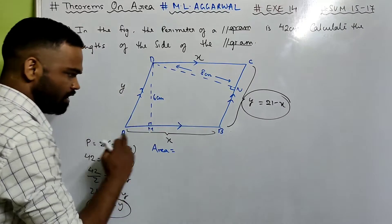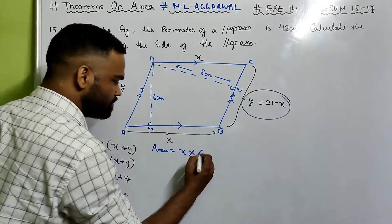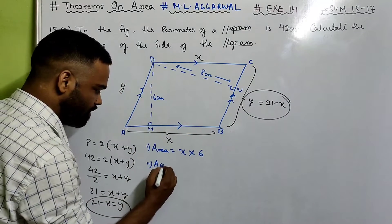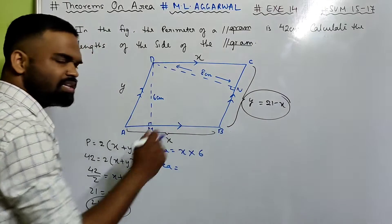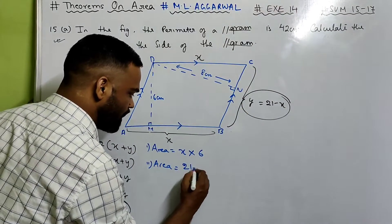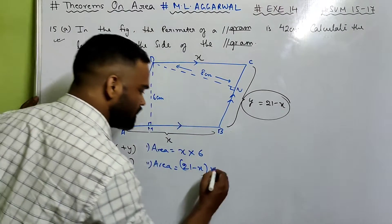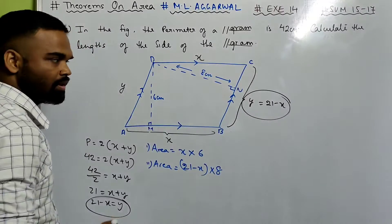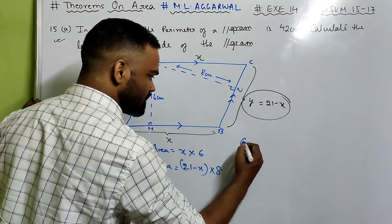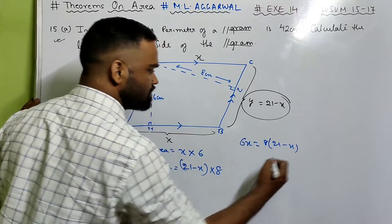Now, area. If AB is your base: area equals base times height, which is X times 6. Again, if BC is your base, then BC equals 21 minus X, multiplied by height 8. Same figure, so area will be the same. So 6X equals 8 times (21 minus X).